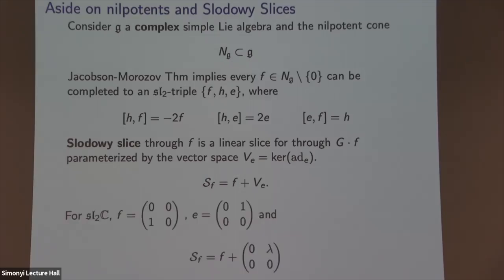For SL(2), here is the nilpotent F = [0,0;1,0], and the slice is F plus things of the form [0, λ; 0, 0] where λ is a complex number. The previous Higgs bundle construction was a kind of Higgs bundle version of this slice, where the coefficient λ wasn't a complex number but some tensor depending on what type of bundles we had.